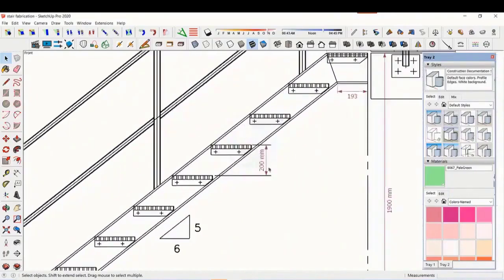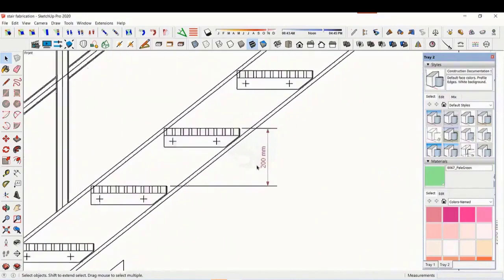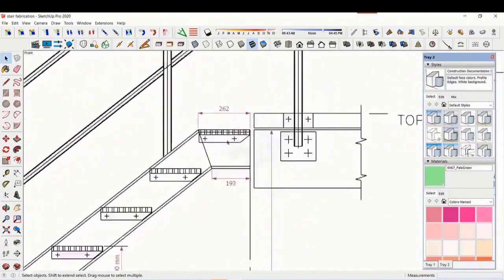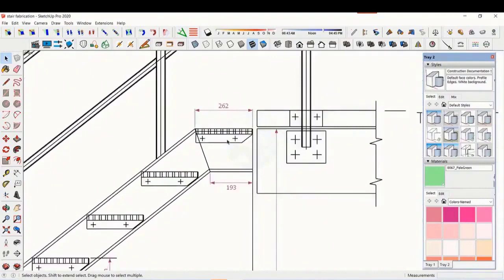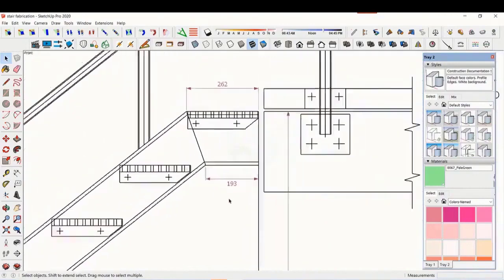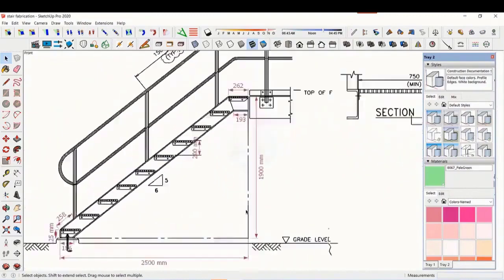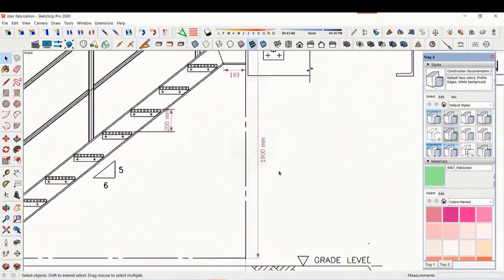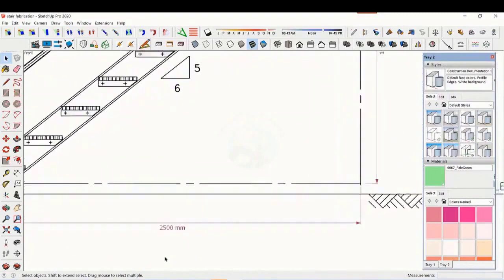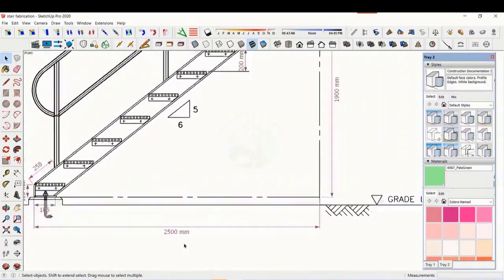The basic structure is made from ISMC 200. The height of the staircase is 1900 mm and the length is 2500 mm. The width of the staircase is 750 mm.